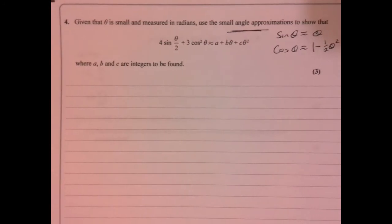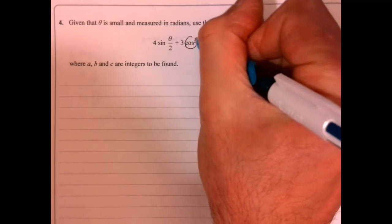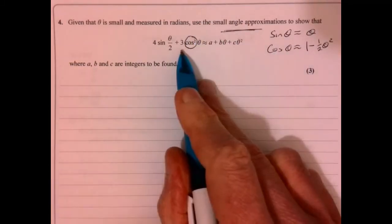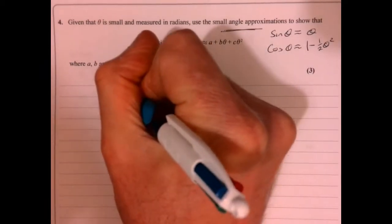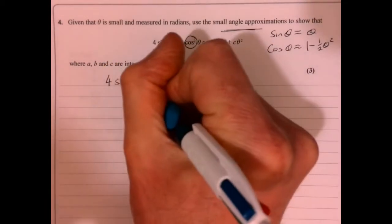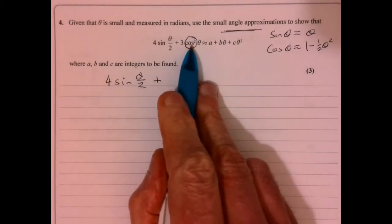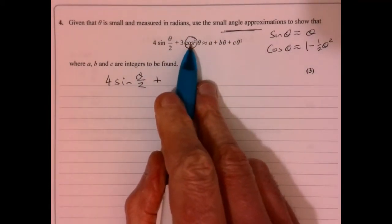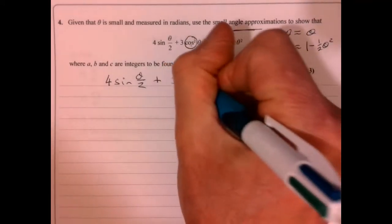So let's just write out what we're actually trying to do. We've got four sine theta over two plus what's cos squared? Cos squared is one minus sine squared. So let's pop that in there.